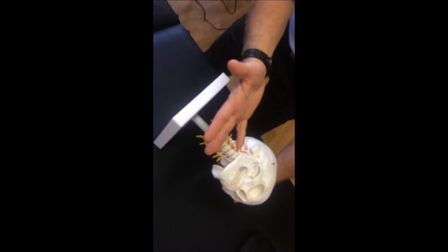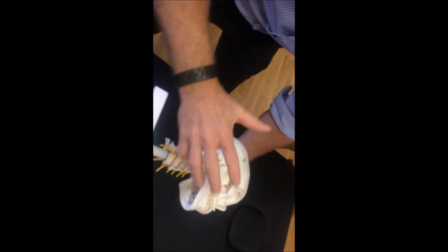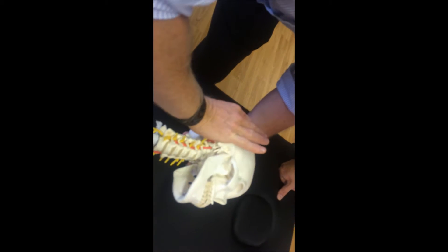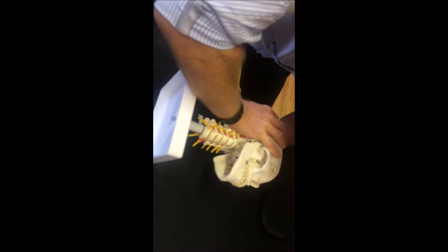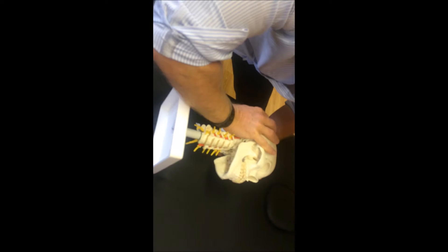And then you've got the occiput there, and the heel of hand is coming under there right under the occiput, so you're stabilizing. Yeah, so it's almost like a traction posterior glide. There's almost traction there, can you see that?